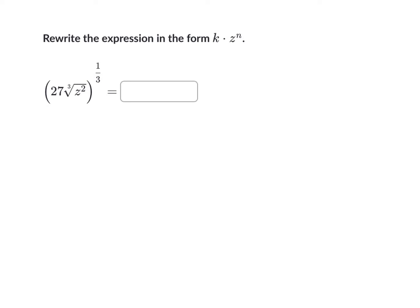So the first thing I would do here is I would take what's in parentheses and I would write it in exponent format. So we can make this as z to the two-thirds. All right, now that we have it written like this, what we can actually do is we can actually take this one-third and apply it to both the 27 and the z. So you can think of this as 27 to the one-third and z to the two-thirds to the one-third.